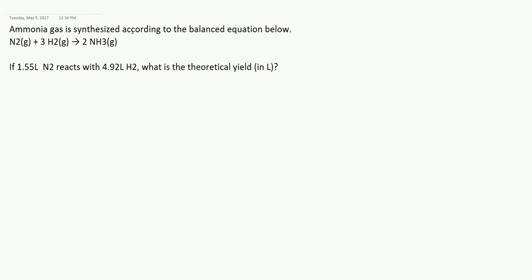Ammonia gas is synthesized according to the balanced equation below. One mole of N2 plus three moles of H2 yield two moles of NH3, or ammonia. So if 1.55 liters of nitrogen reacts with 4.92 liters of hydrogen, what is the theoretical yield?